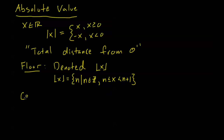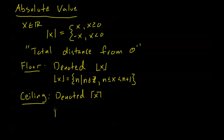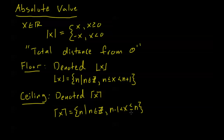Then we have a very similar concept called ceiling. We denote this kind of like the floor, but now there's a roof above x coming from either side — this is the ceiling of x. The ceiling of x is going to be the smallest integer that is greater than or equal to x. In set notation, that's the number n, where n is an integer, and n minus one is strictly less than x, but x is less than or equal to n. If x is an integer, it's going to be its own ceiling. That's the only time the ceiling and the floor of a number equal each other.